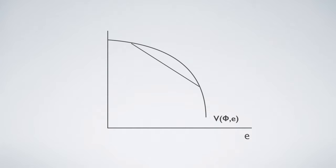Any point on this connecting line forms an expected utility. Expected utility is a constant, so no maximization can be derived.